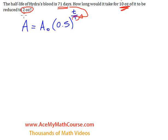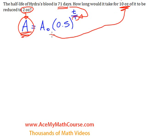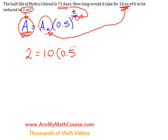The 2 ounces is going to be the final quantity — it's going to replace A in the equation. And the 10 ounces is going to replace A₀, which is the initial quantity. So 2 is equal to 10 times one-half to the power of little t over 71.